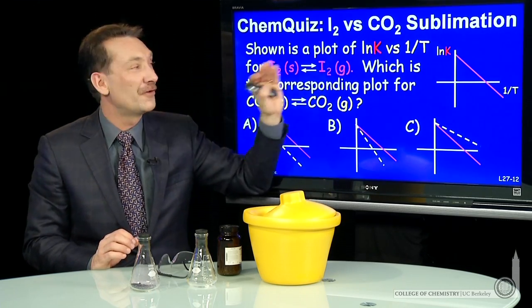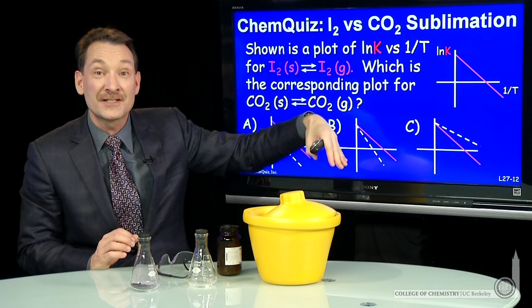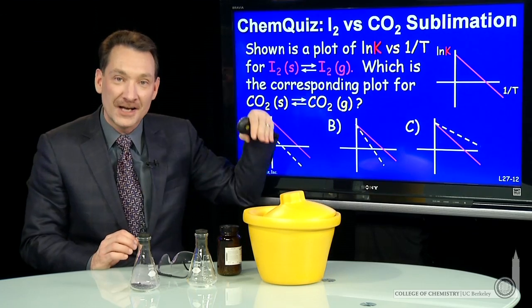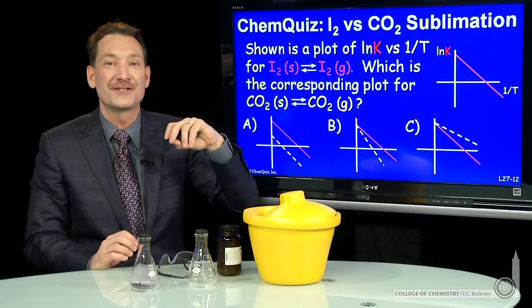This enthalpy is determined by the slope for lnK versus 1 over T. So we expect a less dramatic slope for the carbon dioxide, a lower enthalpy of sublimation, so a less negative slope.